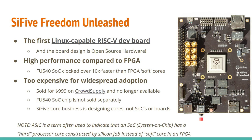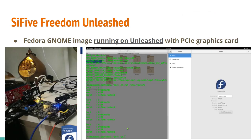A few years ago, SiFive came out with the Freedom Unleashed board, the first Linux-capable RISC-V dev board, using a SoC called the FU540. This was much faster than what people had been using previously — FPGA soft cores, which are inherently slow compared to a real SoC. The board was $1,000 and is no longer available, and the chip was never sold separately, since SiFive's core business is designing and licensing cores. But the Unleashed board showed us that we can actually run a full Linux desktop on RISC-V — here's a Fedora GNOME image running on the Unleashed with a graphics card plugged in.